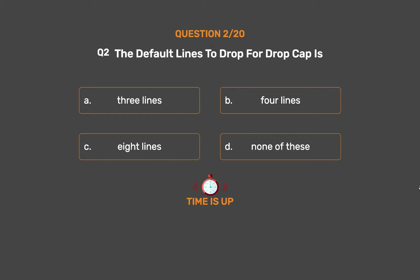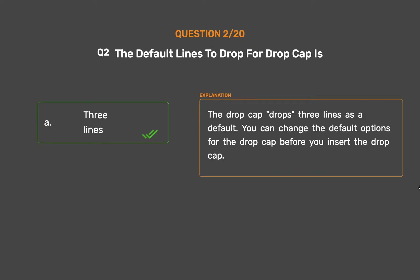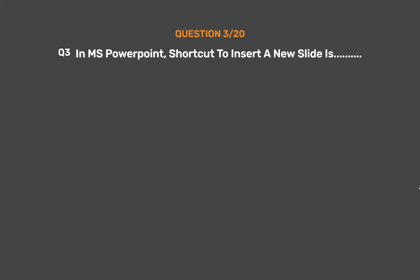The correct answer is Option A: Three lines. The drop cap drops three lines as a default. You can change the default options for the drop cap before you insert the drop cap.